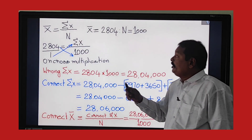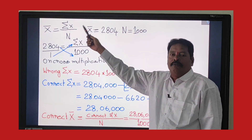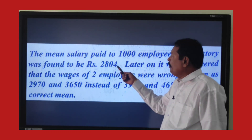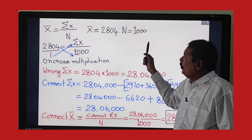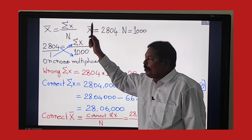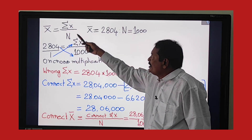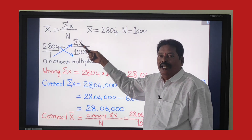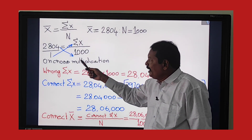First of all, the formula of the arithmetic mean is: x̄ = Σx / n. This is the formula for arithmetic mean. In the given problem, x̄ is 2,804 and n is 1,000. The correct total of wages of the 1,000 laborers is not given. When we apply this in the formula and cross-multiply, we can find the wrong Σx.